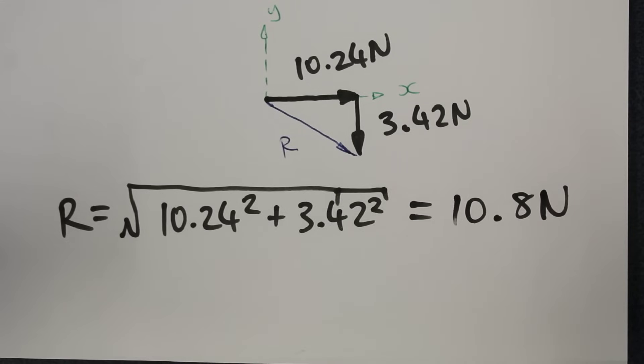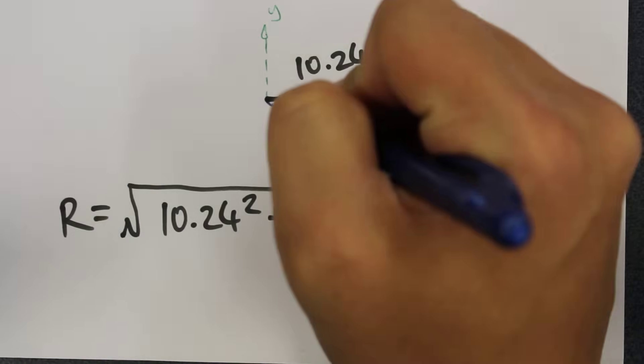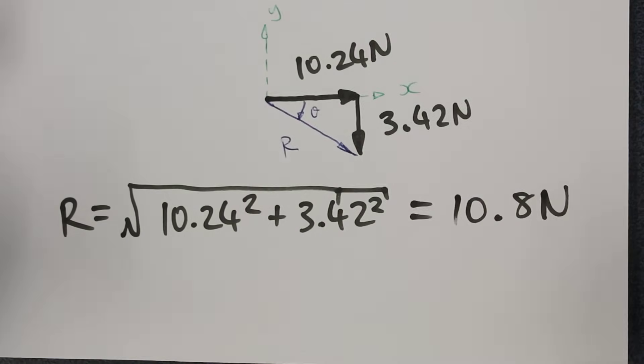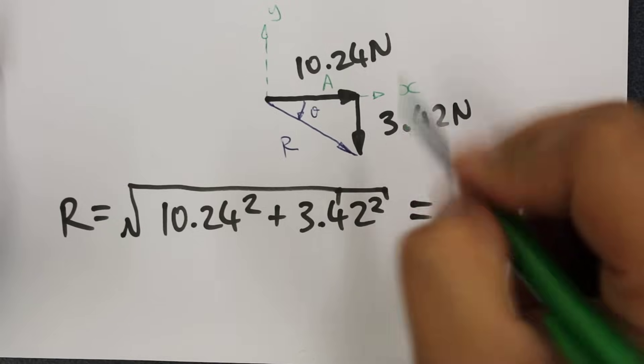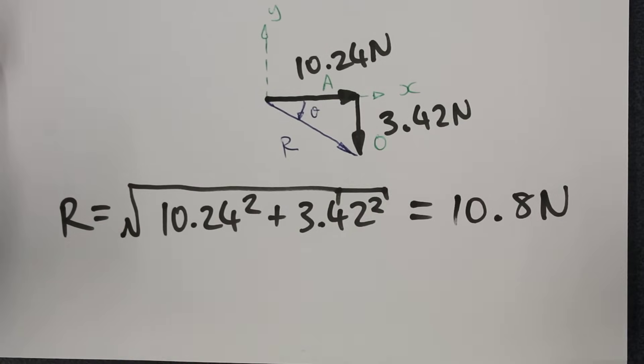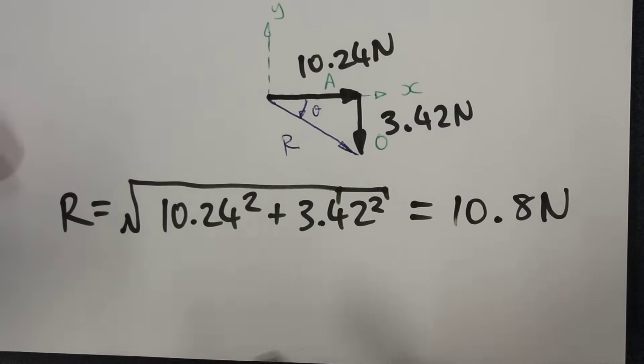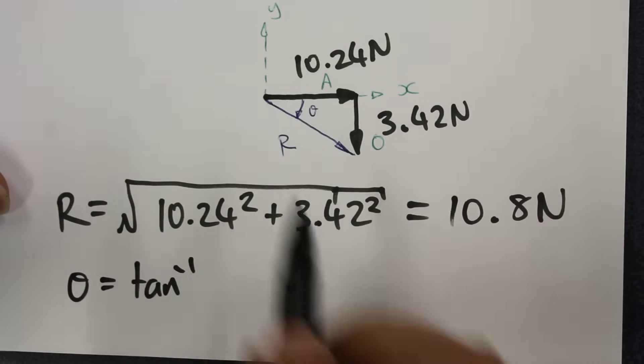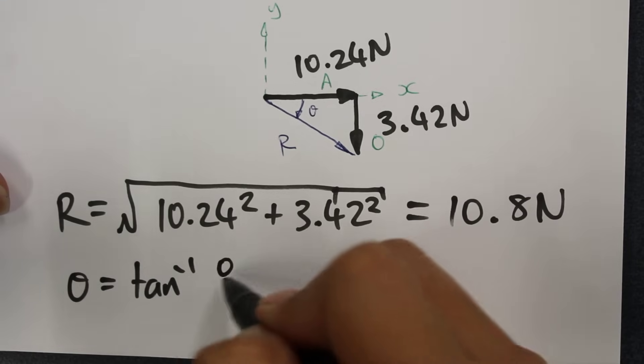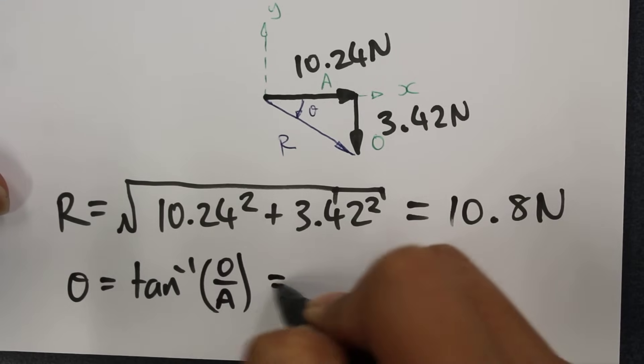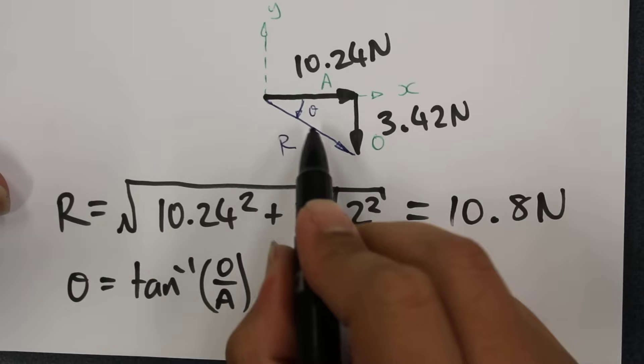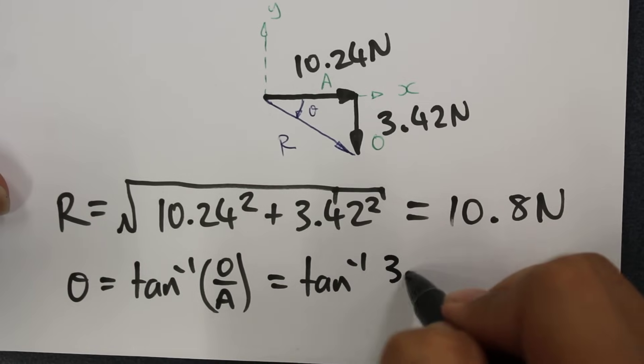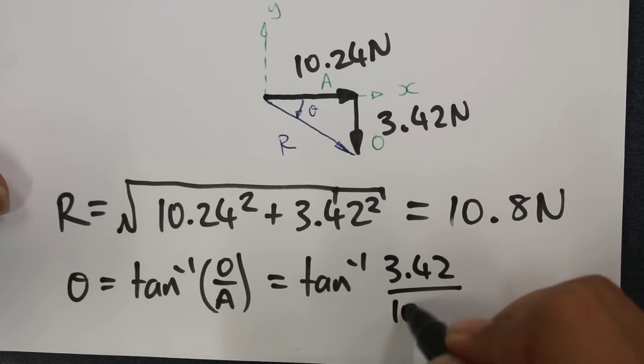We also need to find the angle at which this force acts. That's this angle here, theta. Now recalling from your basic trig, this would become the adjacent side and the opposite side. We can find the angle theta by using the tan rule. Theta is equal to the inverse tan of the opposite divided by the adjacent side. This would be equal to tan inverse of 3.42 divided by 10.24.